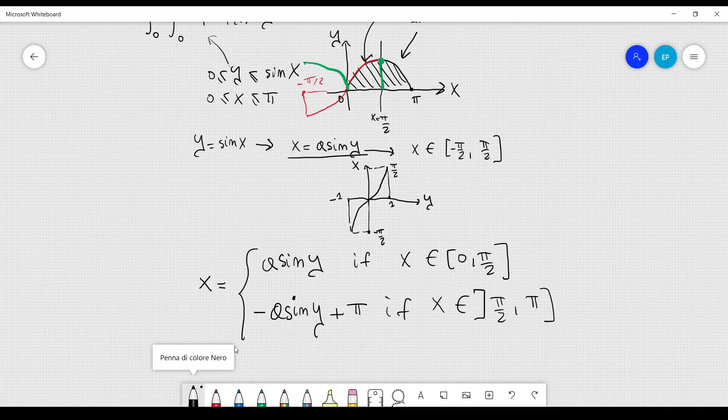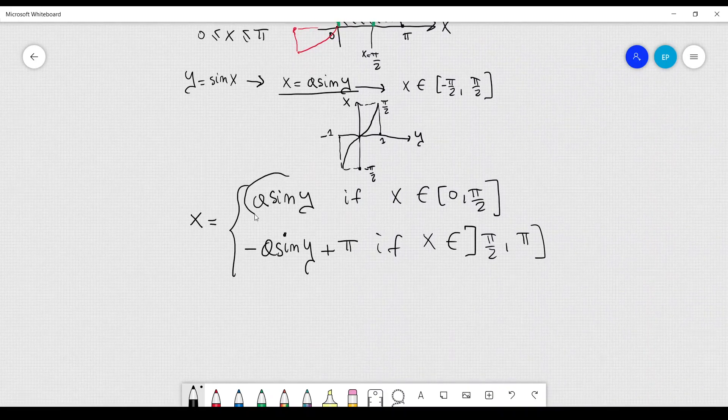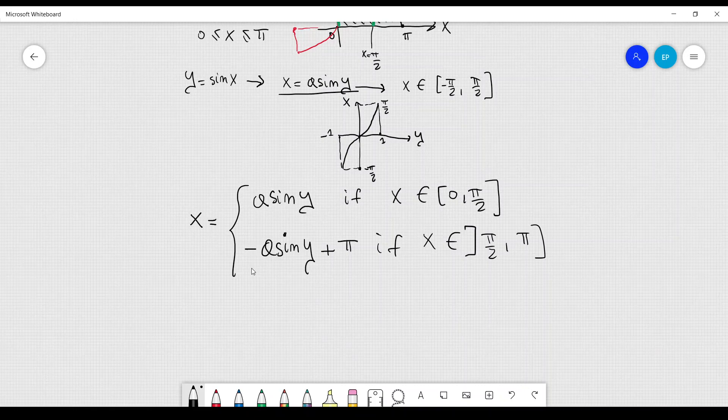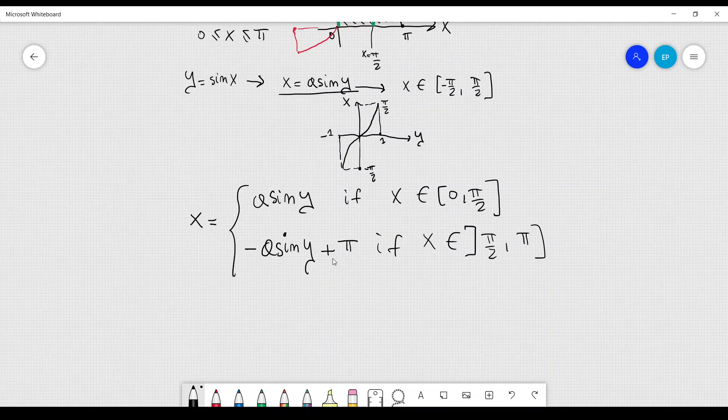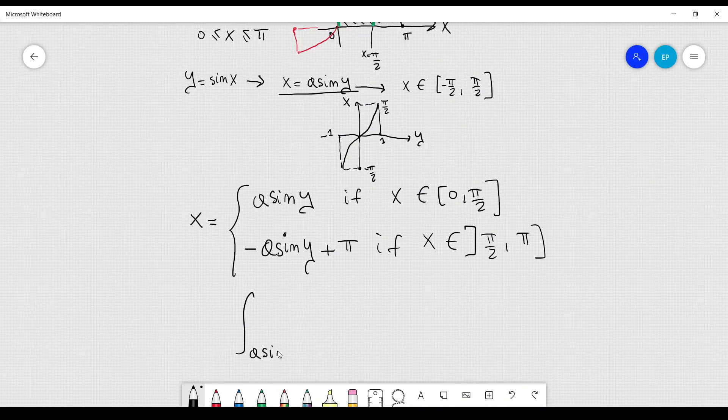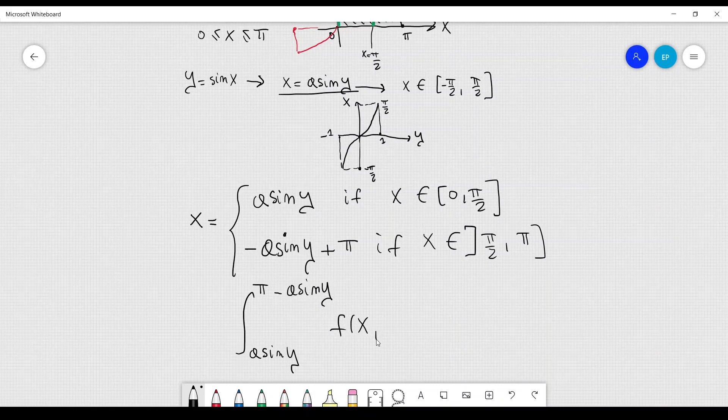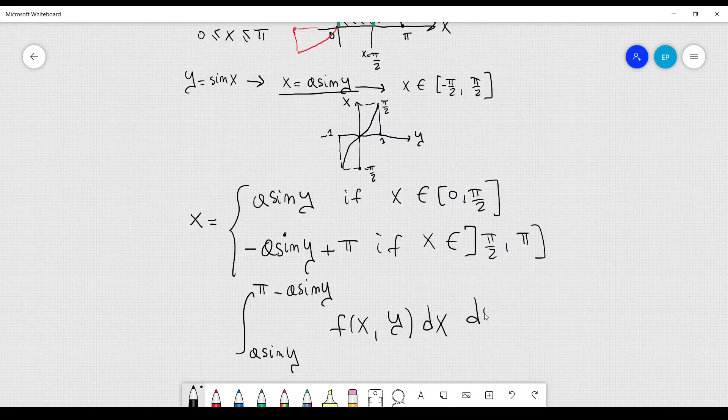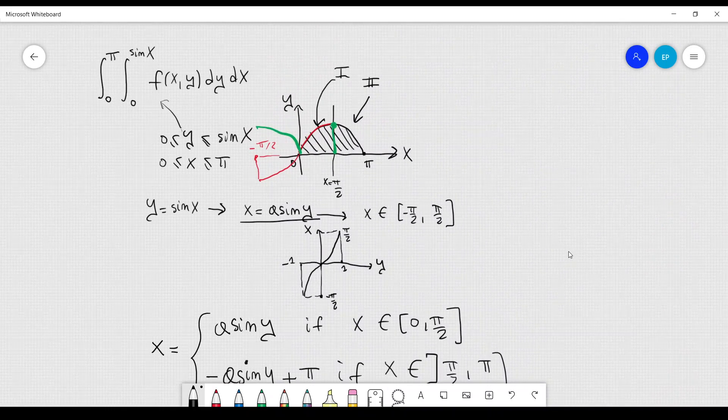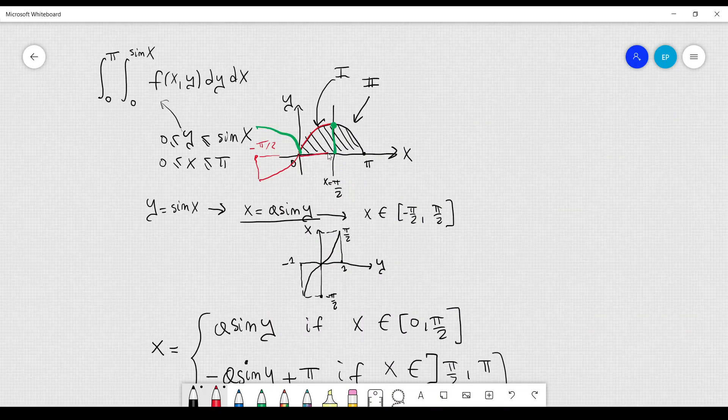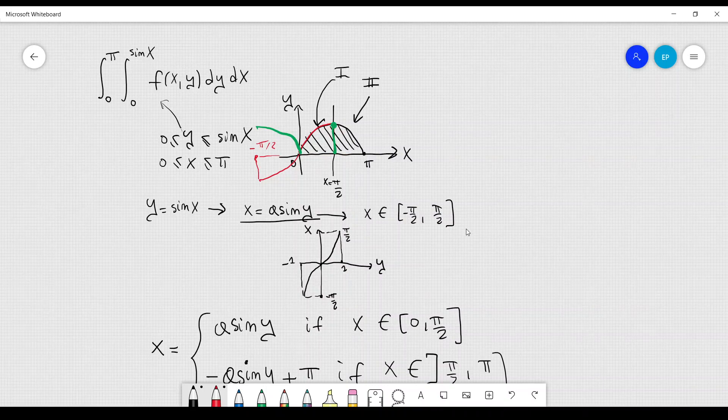When we integrate first over x, we want to go from this portion of the curve all the way up to this portion of the curve. So, we are integrating actually from left to right. The integral over x goes from a sine of y to π minus a sine of y, f of x, y, dx, and then I have dy and y goes from 0 to 1. It is easy to see because we are moving from y equal to 0 here, and then we are going all the way up to y equal to 1. And this is the result.